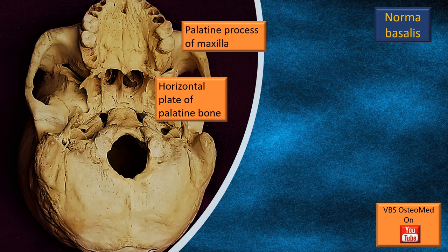Let us examine the hard palate in a little detail. It has two components. The upper flashing arrow is the palatine process of the maxilla. The lower flashing arrow is the horizontal plate of the palatine bone. That means there are two bones forming the hard palate. We need to zoom into that region to get better clarity.